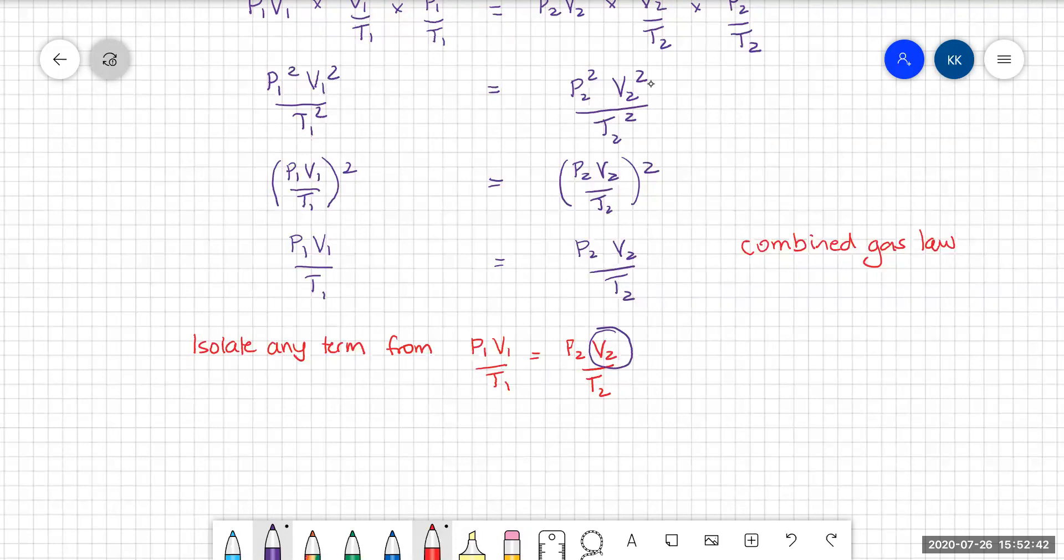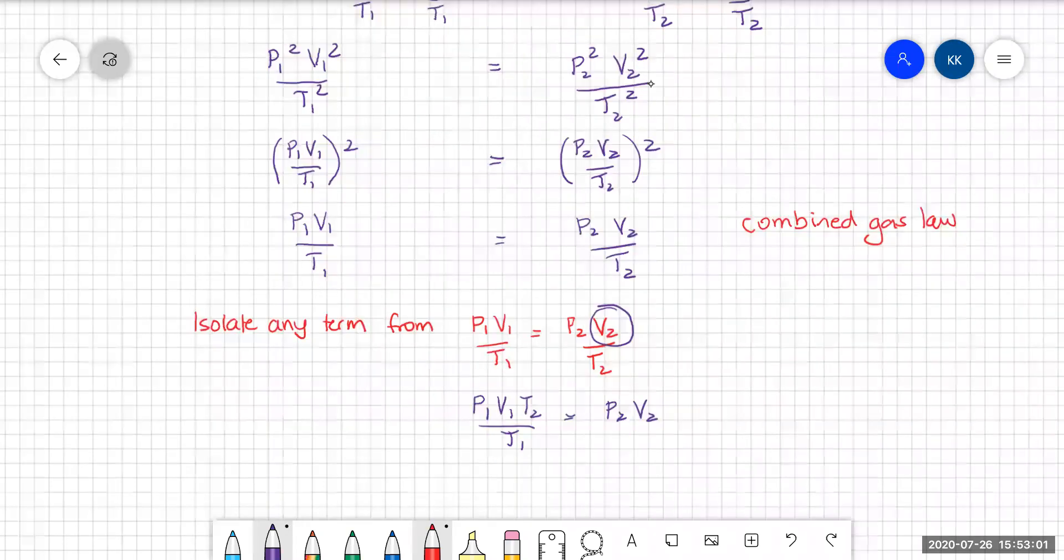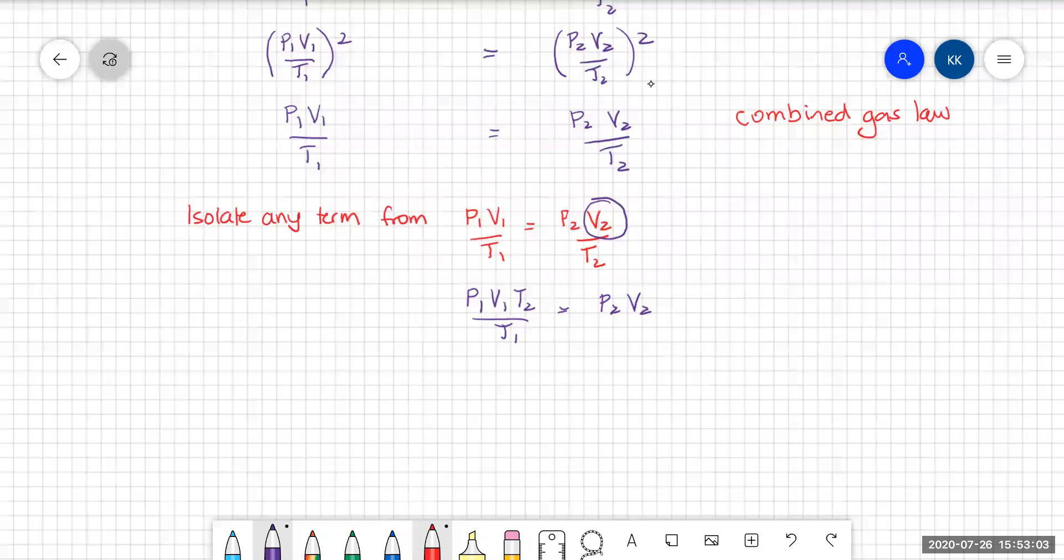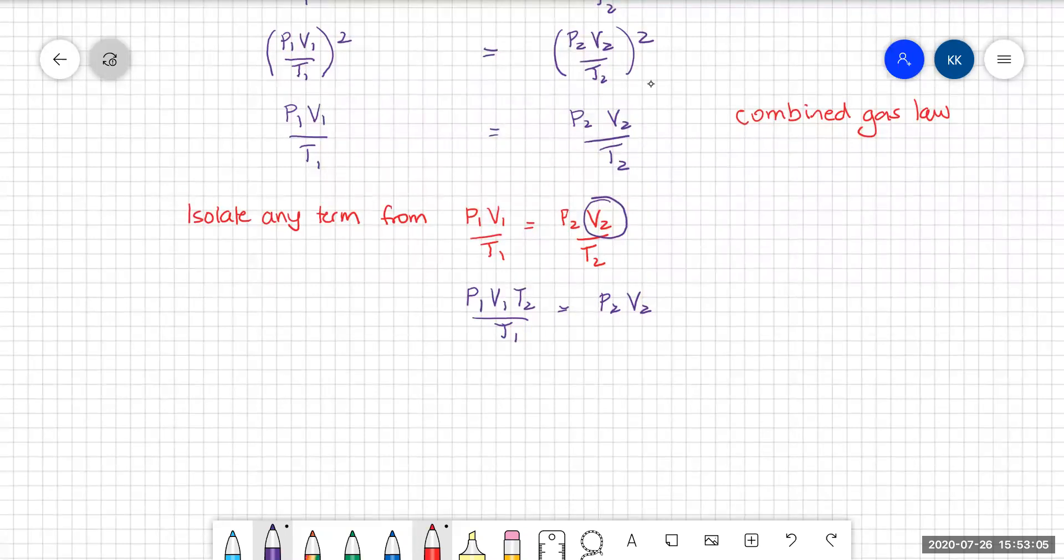You know that V2 has been multiplied by P2 and divided by T2. So to get V2 on its own, you're going to have to multiply both sides by T2. And that will leave you with P2V2. And from there, you're going to need to divide both sides by P2. And then you've isolated V2.